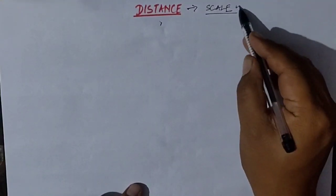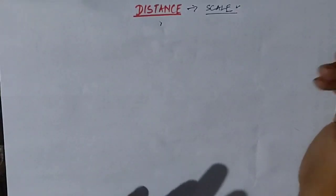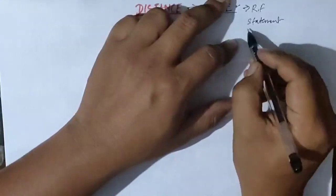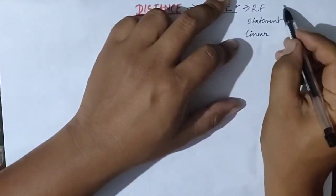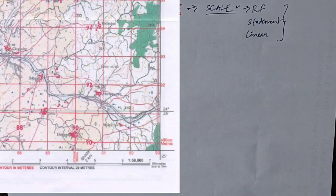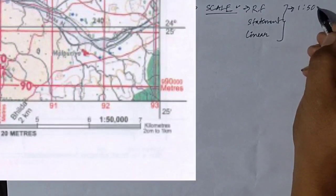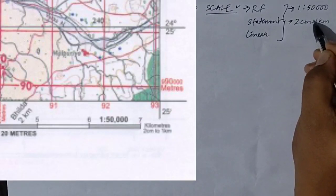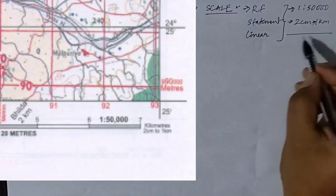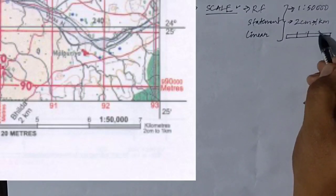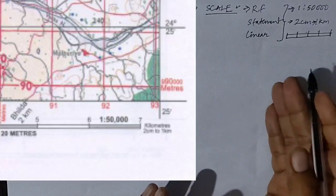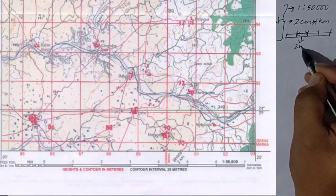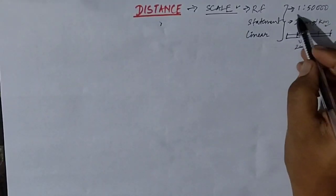Let's start our video. Regarding the classification of scale, briefly: we have three different types — RF, statement scale, and linear or graphical scale. All those scales are present in the topographical map. RF is represented as a ratio, like 1:50,000. Statement scale is written directly, like '2 centimeters equals 1 kilometer.' The linear scale is given in graphical form just below the map, divided into different parts, where each division is 2 centimeters representing 1 kilometer.